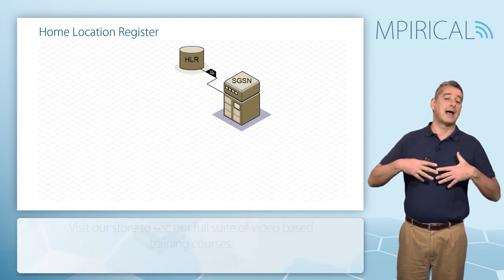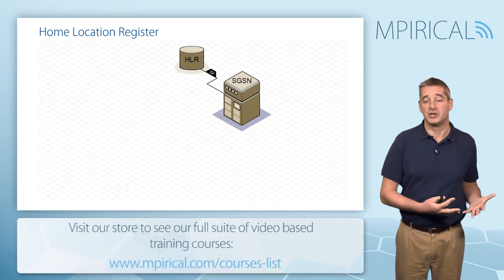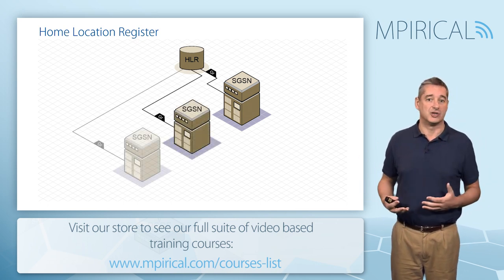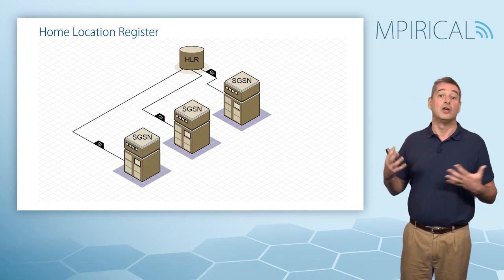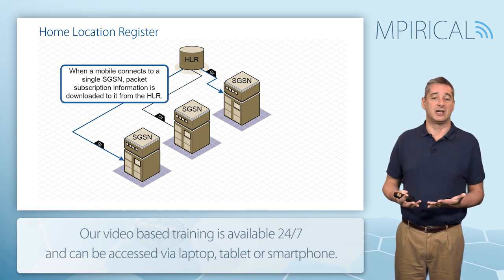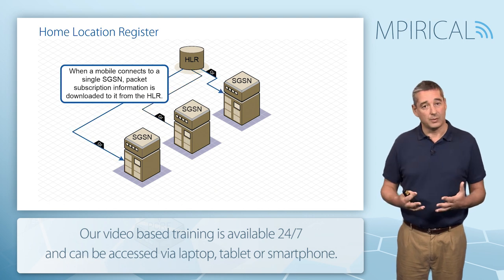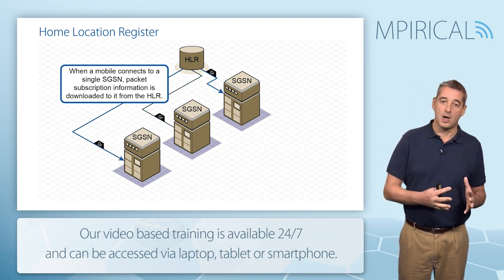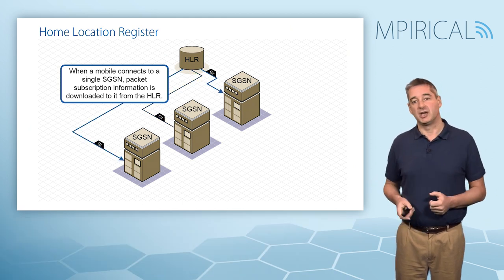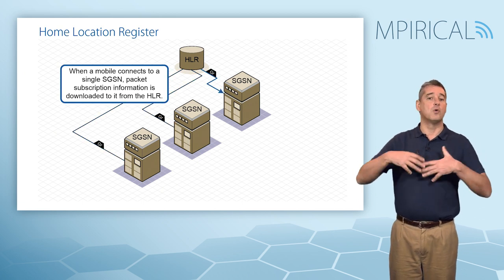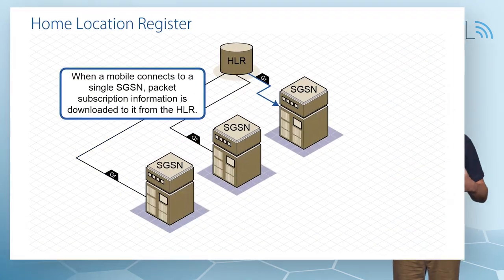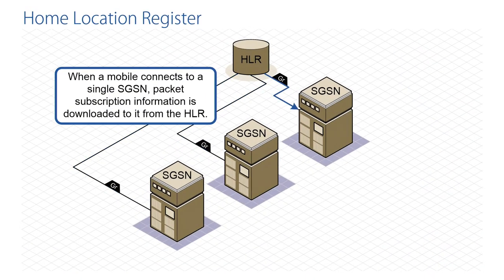Just as a network has multiple MSCs for circuit switching, it will have multiple SGSNs to support packet switched operation. Each SGSN connects to the HLR via the Gr interface. As a mobile connects to an SGSN, packet switch subscription information is downloaded from the HLR to the SGSN, enabling it to manage the mobile — just as the MSC VLR manages circuit switch services for the same mobile.